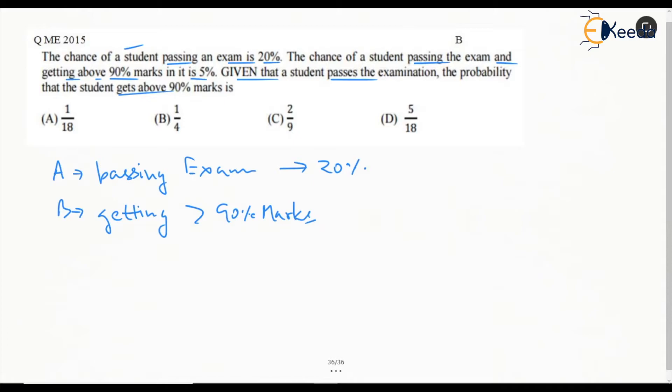They are talking about passing the exam and getting above. If it is and getting above, it means this is A intersection B. And the probability for this case is 5%.